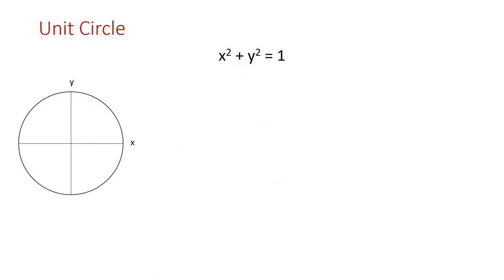Consider the unit circle: x squared plus y squared equals one. Here P1 is a point on the unit circle with coordinates x1, y1. This means x1 is the horizontal distance and y1 is the vertical distance. Suppose that the angle between the y-coordinate axis and P1 is equal to alpha.